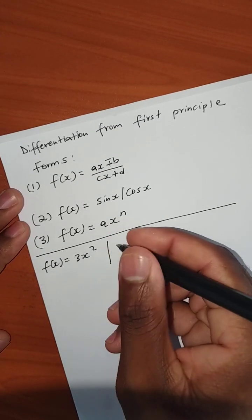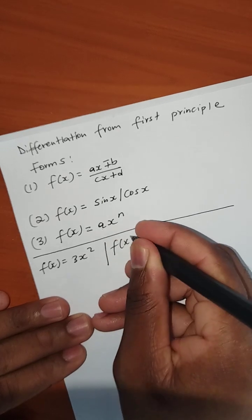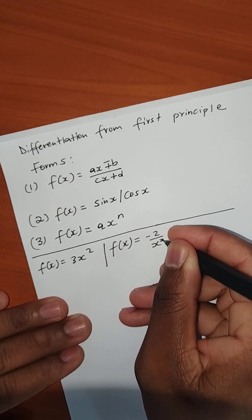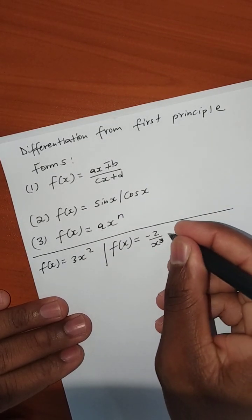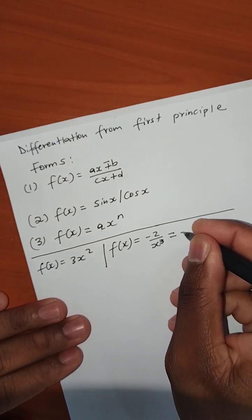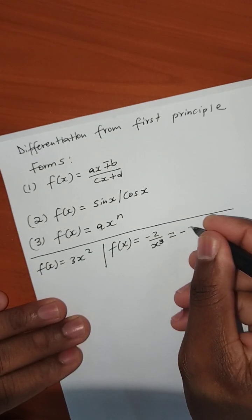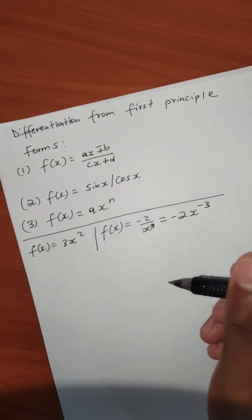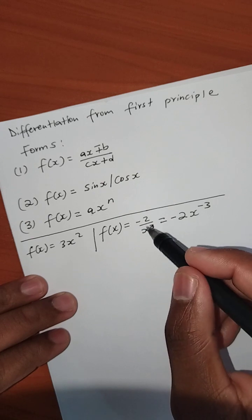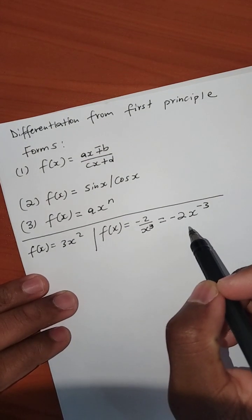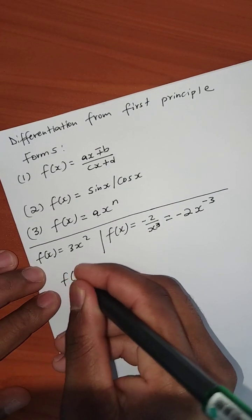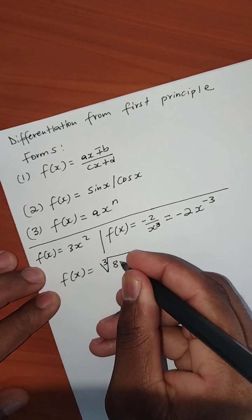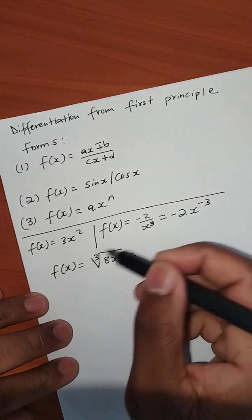Sometimes the problem won't be written exactly in standard form. For example, they might say differentiate 1/x³ from first principle. Your first task is to rewrite it in standard form, which gives negative 2x to the power negative 3. You must always change the problem into standard form first.